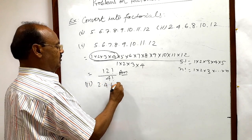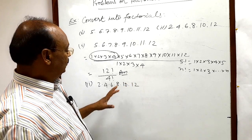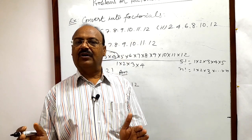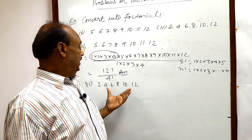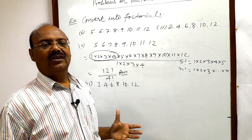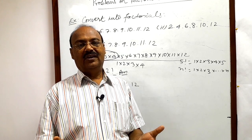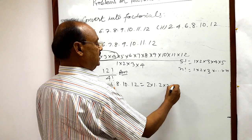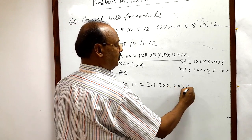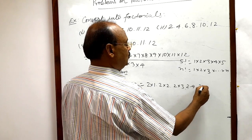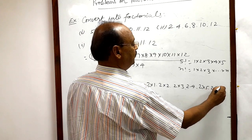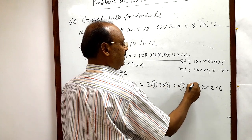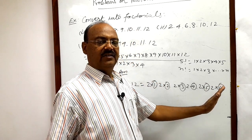Now for the second part: 2 × 4 × 6 × 8 × 10 × 12. In a factorial form, natural numbers must be multiplied in continuation starting from 1, like 1, 2, 3, 4, 5, 6, 7. But here only even numbers are multiplied. So what we do is: 2 = 2×1, 4 = 2×2, 6 = 2×3, 8 = 2×4, 10 = 2×5, and 12 = 2×6.